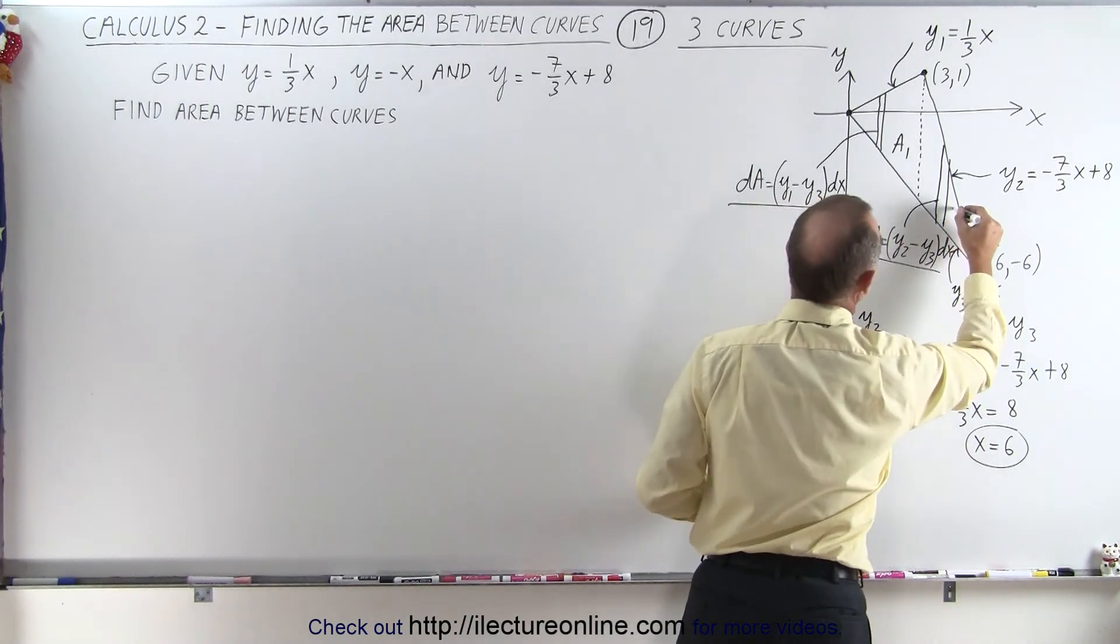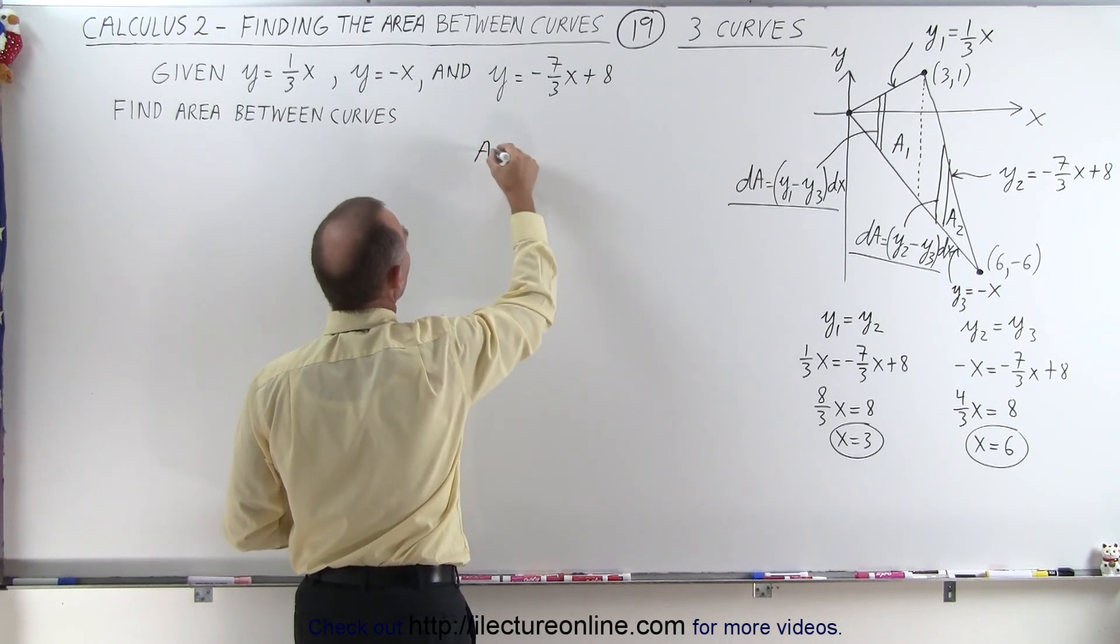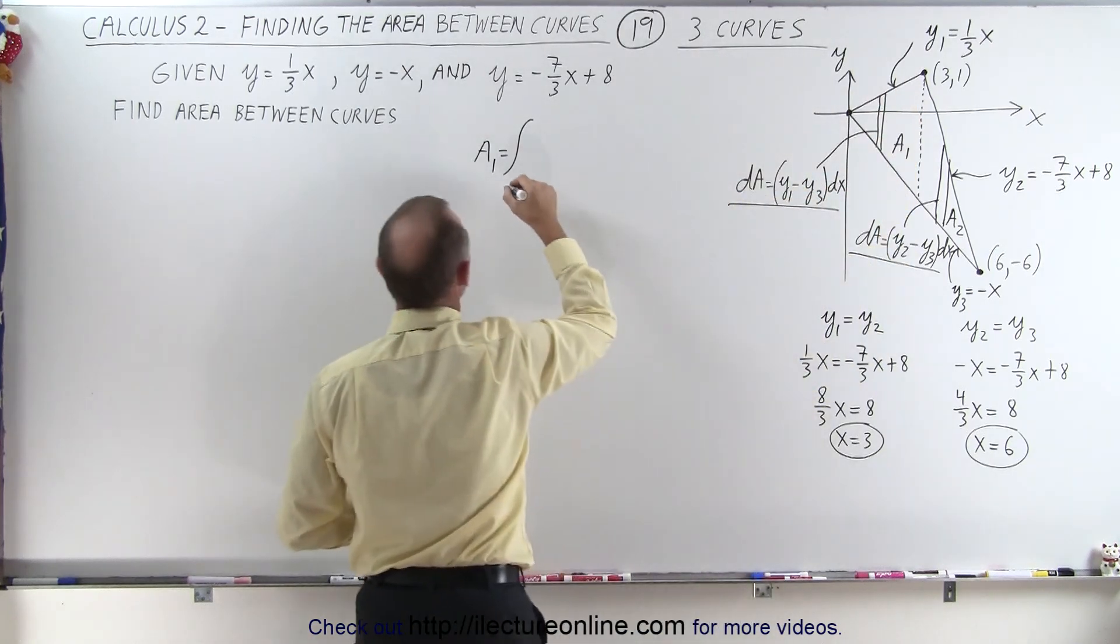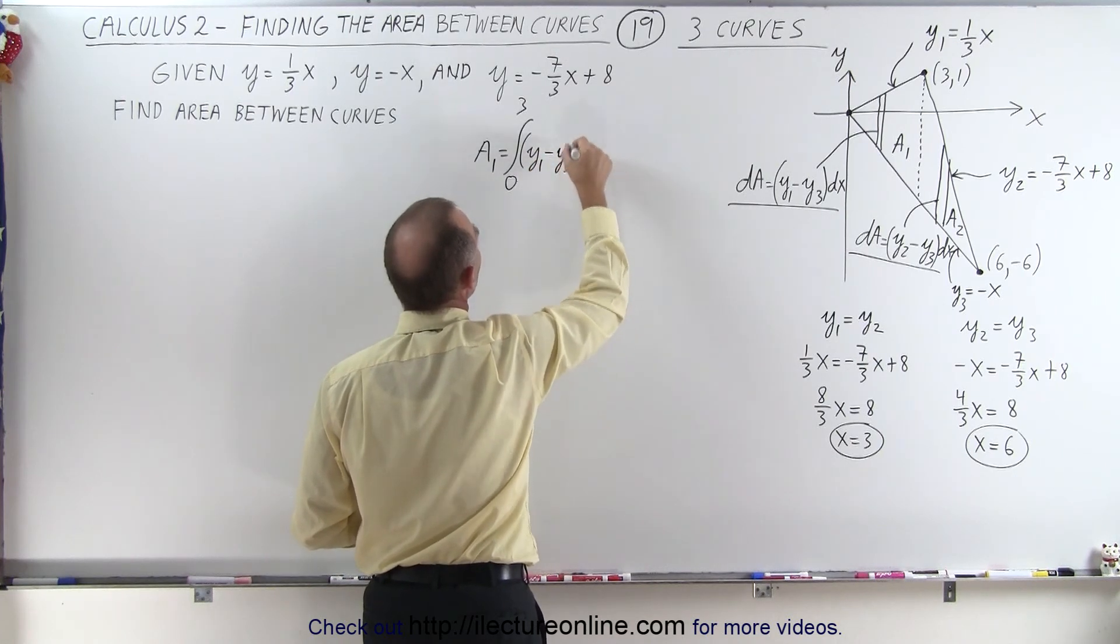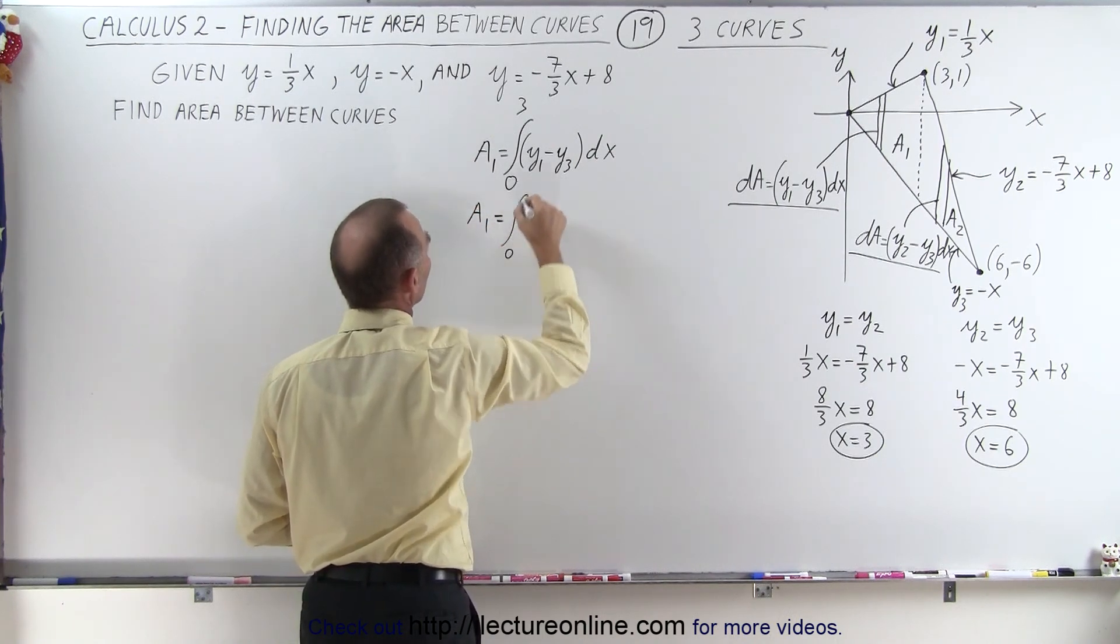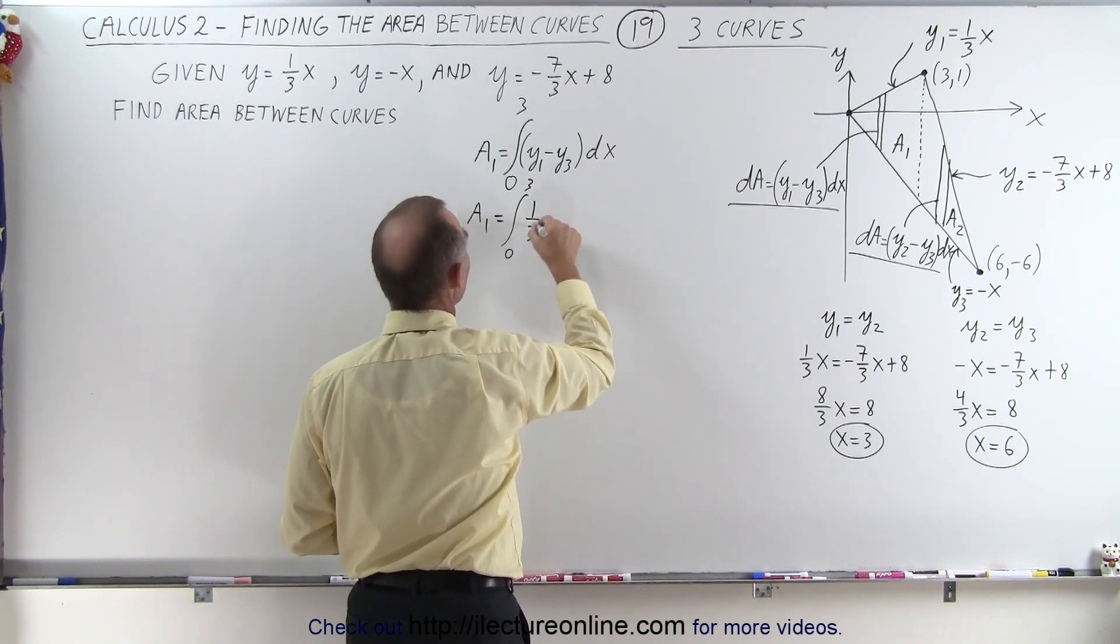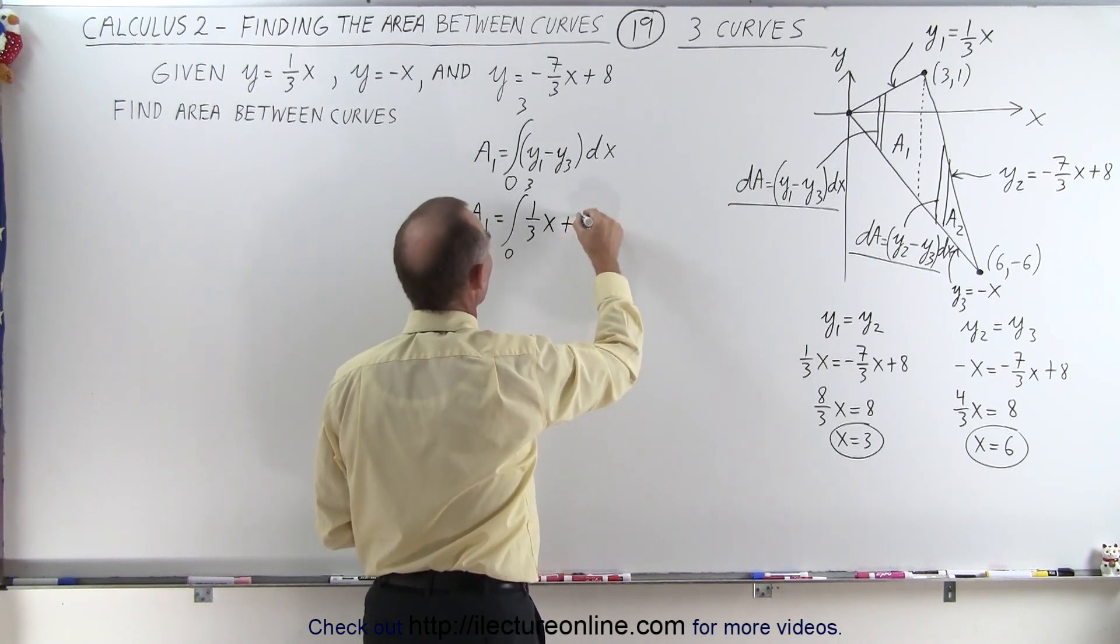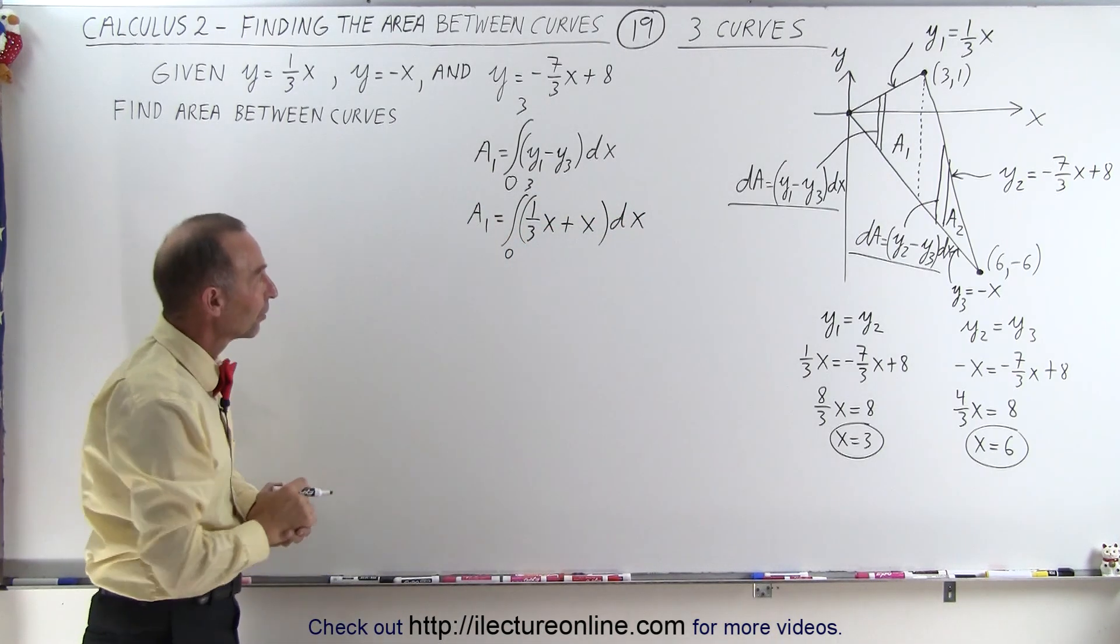So now we can go ahead and integrate both of those areas. So finding a1, that's equal to the integral from x equals 0 to x equals 3 of the quantity y1 minus y3 times dx, and then we plug in what those are equal to. a1 is equal to the integral from 0 to 3 of y1, which is 1/3 x, minus y3, and y3 is -x, so minus times the minus makes that a plus x, and that's times dx.